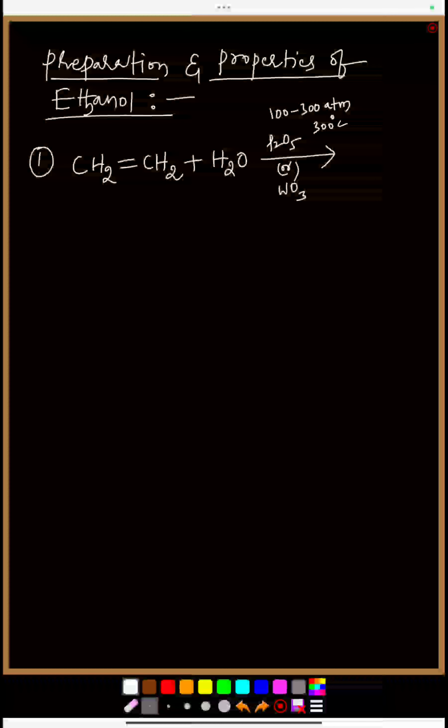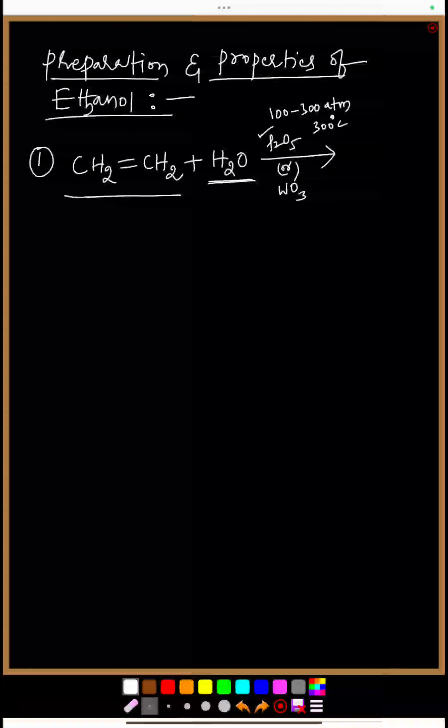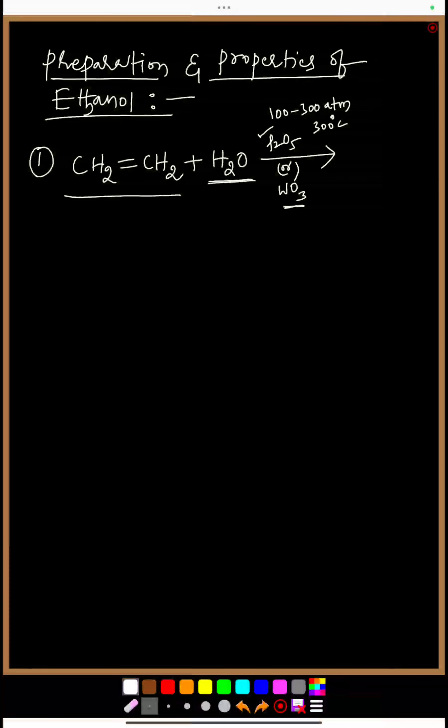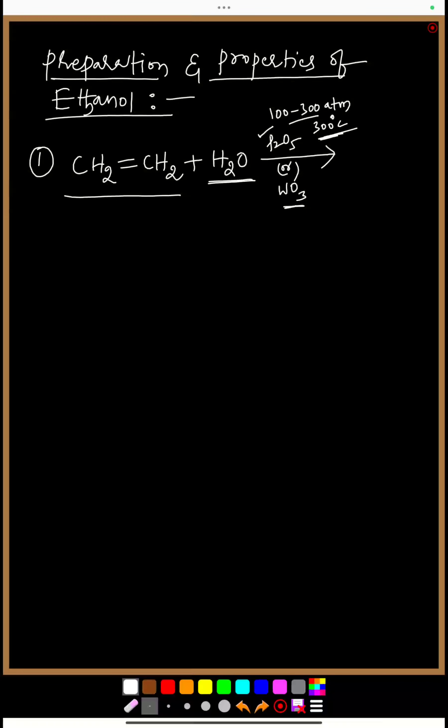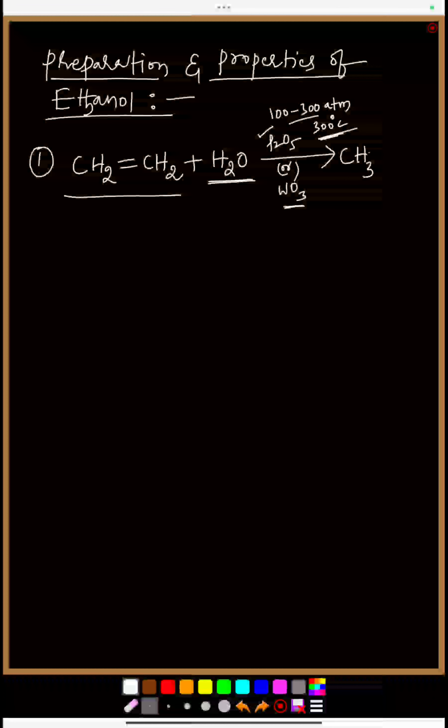So ethyne I have taken and I added water vapor to it in large scale, and this reaction happens in presence of phosphorus pentoxide or tungsten oxide with the pressure and temperature of 100 to 300 atm and 300 degrees Celsius. There we'll get the product, that is ethyl alcohol or ethanol.